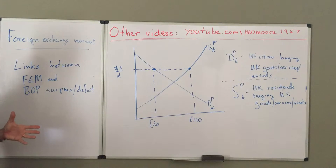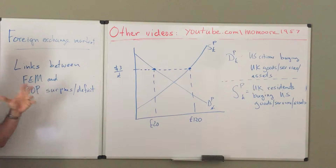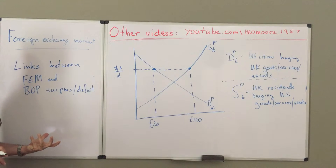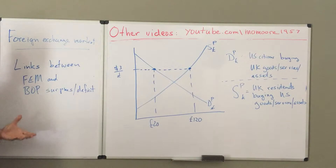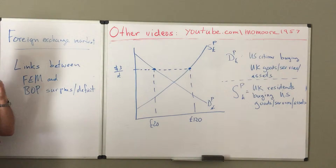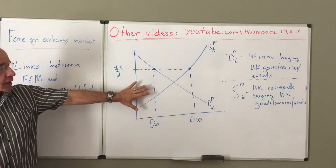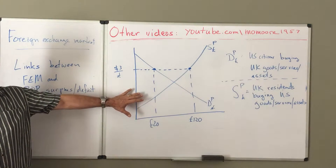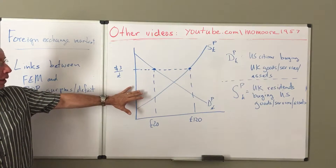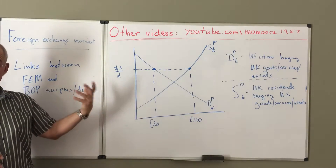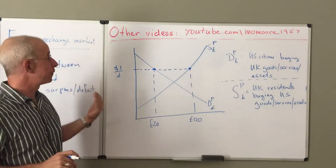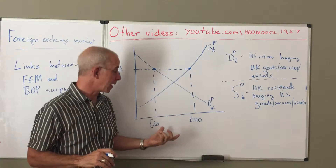There's an important link between foreign exchange markets and the balance of payments surpluses and deficits that we talked about in a different part of the course. Let's start with recalling this supply and demand graph that we posited earlier for the market for pounds.